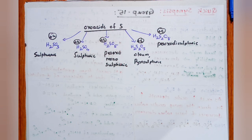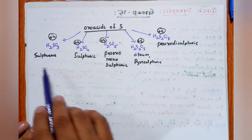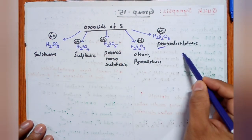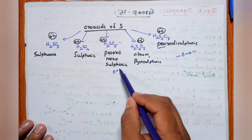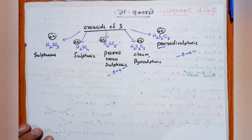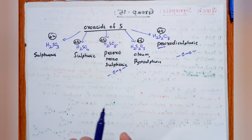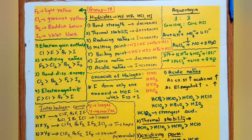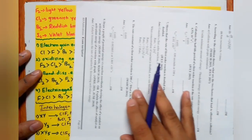For Group 16 oxo acids of sulfur, there are five acids: sulfurous acid, sulfuric acid, peroxomonosulfuric acid, oleum, and peroxodisulfuric acid. Where 'peroxo' appears, a peroxide linkage is present. A detailed explanation will be given in a separate video.